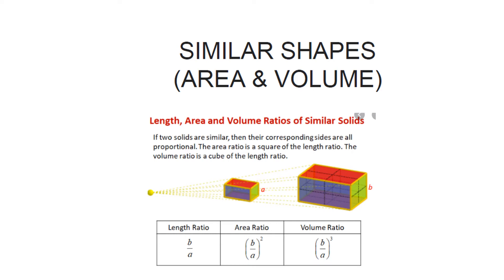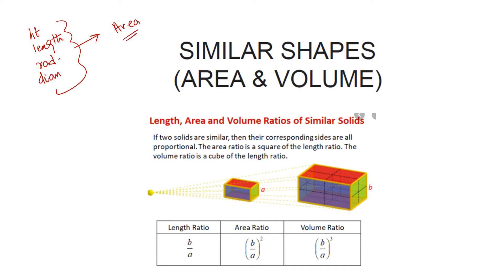Let's revise quickly the ideas we have learned: if the height, length, radius, or diameter is given to us and we want to find out the area of some unknown value, we square these terms to get the area.